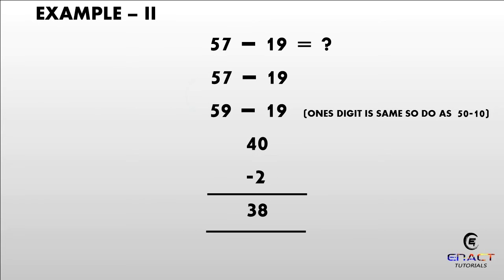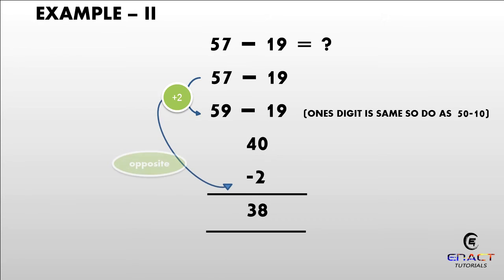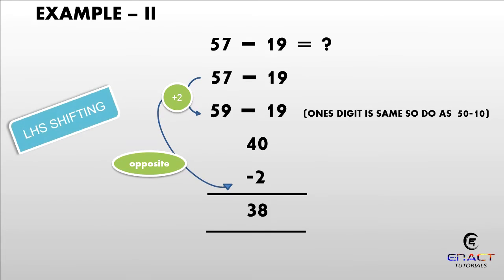Example number 2: 57 minus 19. Adding 2 to 57, it will become 59. As you can see, the ones digit is the same, so directly subtract 59 minus 19. Hence our answer is 40. Change this plus 2 to minus 2. Subtracting 40 minus 2, our answer will become 38.